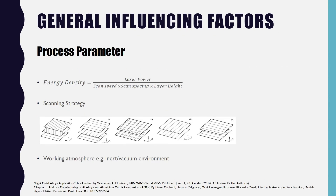The next influencing factor is process parameters. One of the most common is called the energy density equation: energy density equals laser power divided by scan speed, scan spacing, and layer height. Research has been done to optimize these process parameters so that different materials can be used, and changing these parameters has a significant effect on your built part.